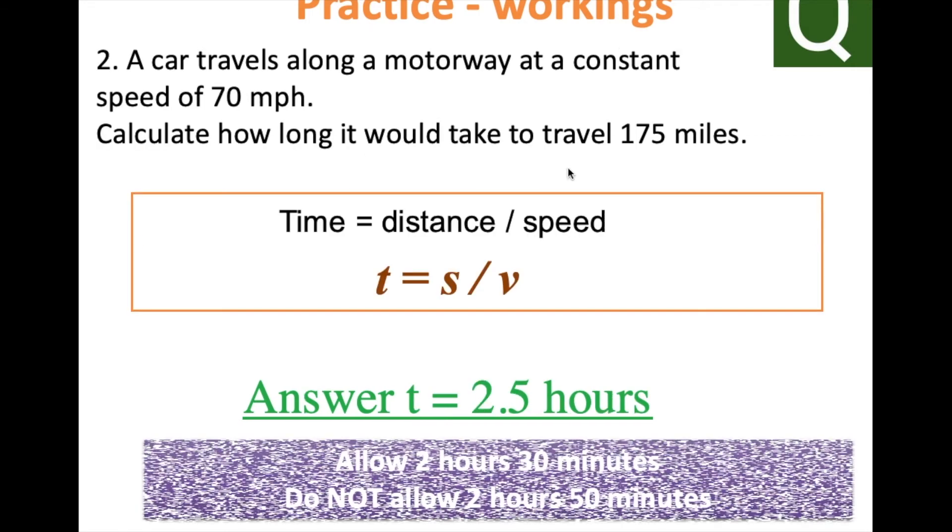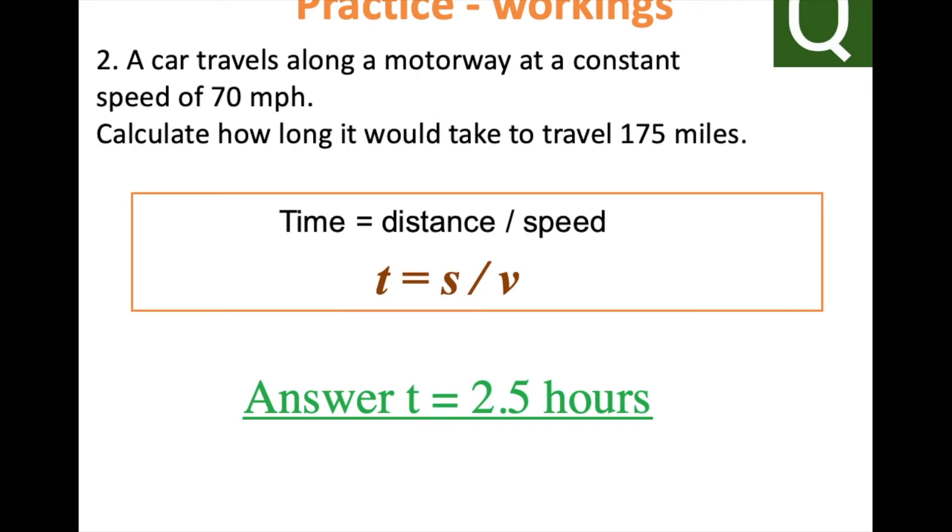Question two: a car travels along a motorway at a constant speed of 70 miles per hour. That's our speed. How long would it take to travel 175 miles? So we're looking to calculate the time, and we're going to divide 175 by 70 miles per hour. The answer is 2.5 hours.